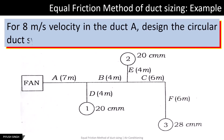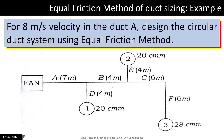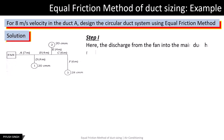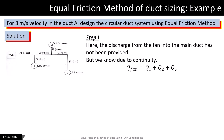Consider the duct system shown here. It is given that the velocity in the main duct A is 8 meters per second. We have to design a circular duct system using the equal friction method. In the first step, we calculate the discharge from the fan, which has not been provided. The discharge from the fan is equal to the air supply to the different zones. So Q_fan equals Q1 plus Q2 plus Q3, which comes out to be 68 CMM or 1.133 cubic meters per second.